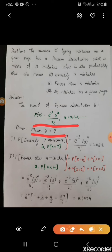In the formula we substitute λ = 3 and the value of x for each subdivision. The first subdivision is P(exactly 7 mistakes), that is P(x = 7). We substitute x = 7 and λ = 3, giving e^(−3) · 3^7 / 7!. Calculating this, we get 0.0216.